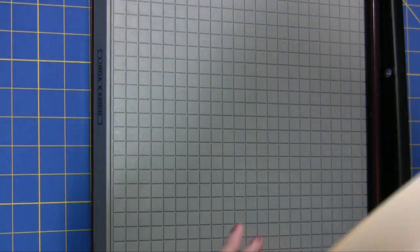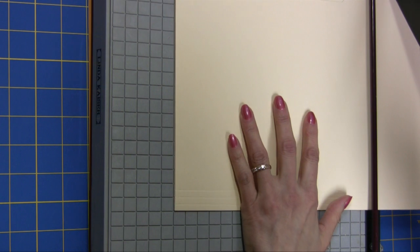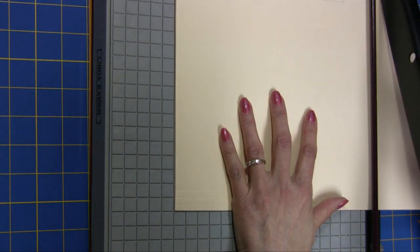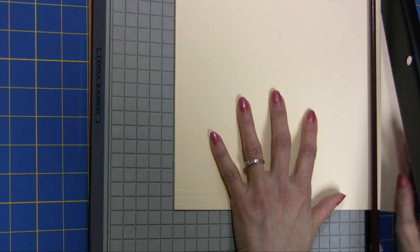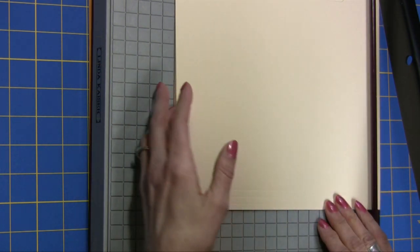I used regular size file folders. The first step is to trim the file folder to 9 1/2 inches. I'm using this particular paper cutter because it's a little bit stronger when cutting through two thicknesses. You can use any paper cutter.